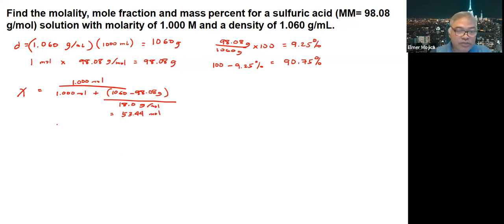So if we're going to have here for the mole fraction of sulfuric acid, so that would be 1 mol divided by 54.44, and that would be around 0.0184. And to get the mole fraction of water, so we can just put 1 minus 0.0184. So this would give us around 0.9816.